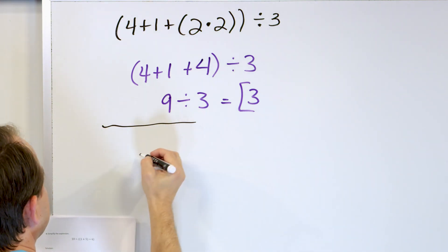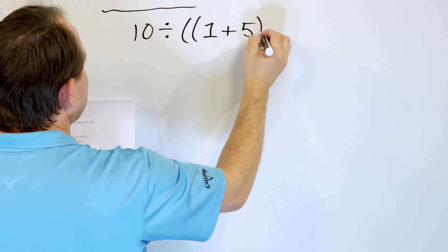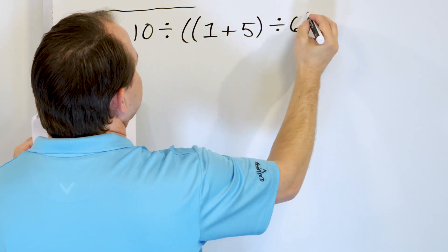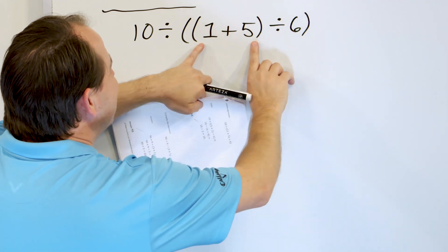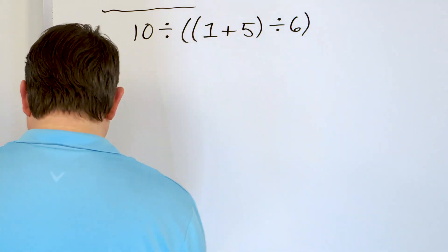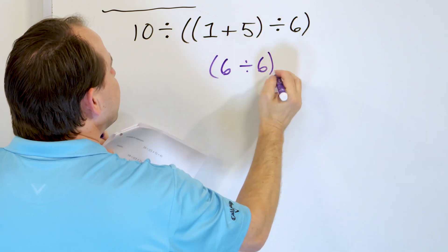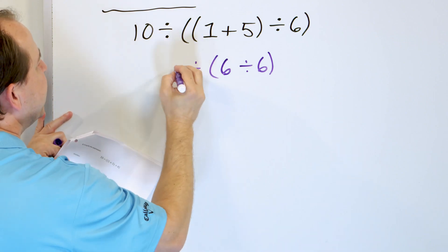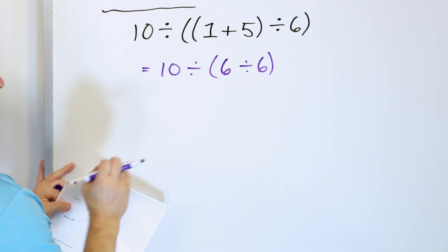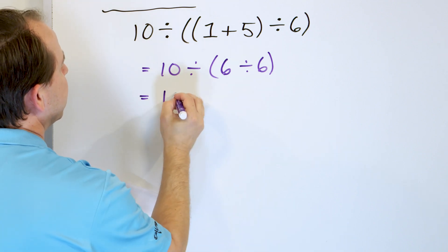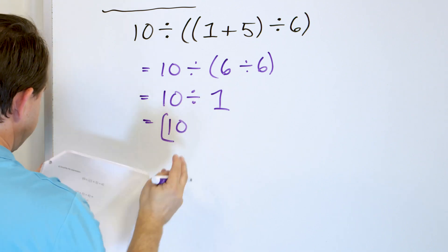Problem number 4: 10 divided by, open two sets of parentheses, 1 plus 5, close parentheses, divided by 6, close parentheses. We have an outer set of parentheses and an interior set, so we do the inner one first: 1 plus 5 becomes 6. The outer parentheses and the 10 get rewritten. Now we still have the outer parentheses — 6 divided by 6 is 1. Then 10 divided by 1 is 10, and that's the final answer.